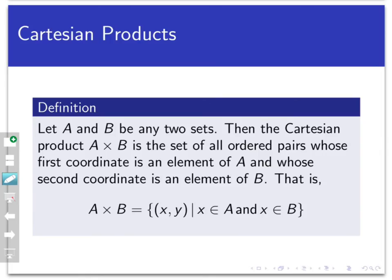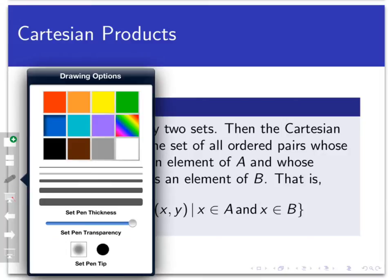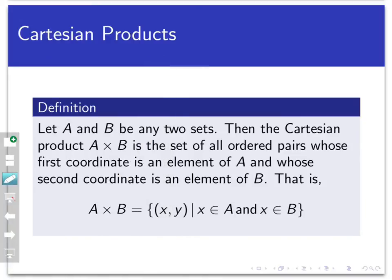Just to remind ourselves what a Cartesian product is: a Cartesian product is a really simple idea. You start with any two sets A and B, and A cross B is the Cartesian product — that's the set of all ordered pairs whose first coordinate is an element of A, and whose second coordinate is an element of B.